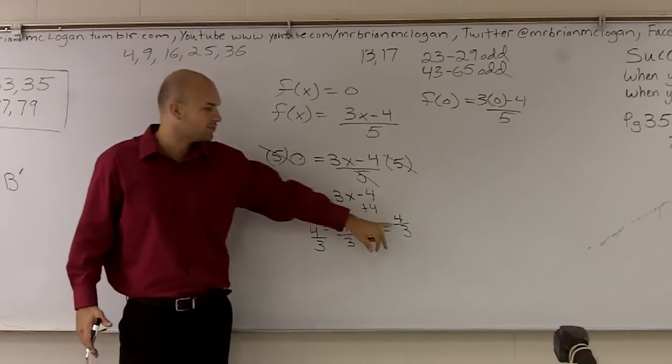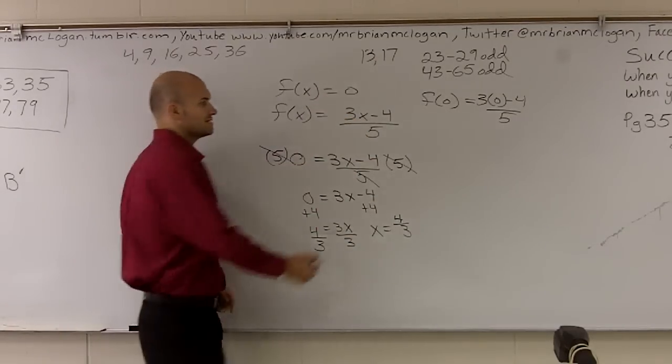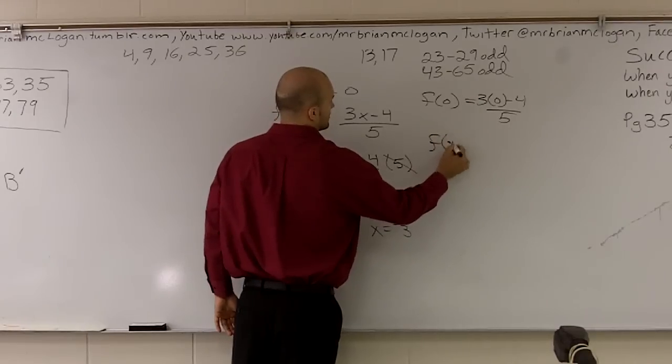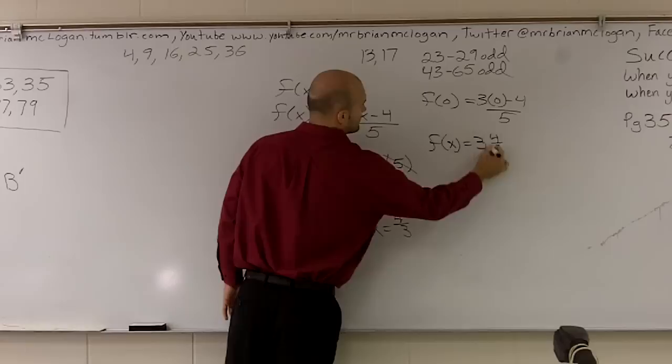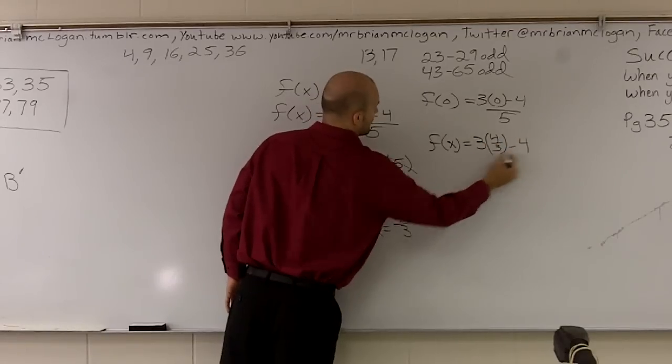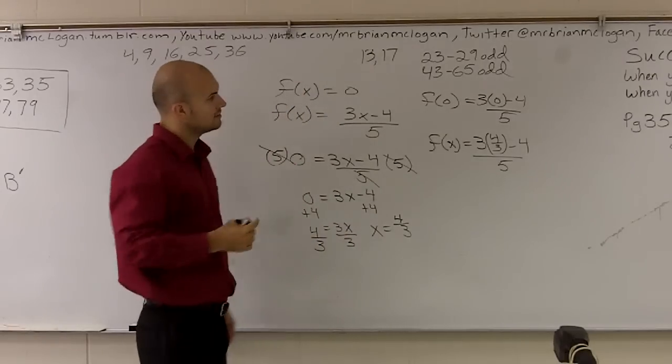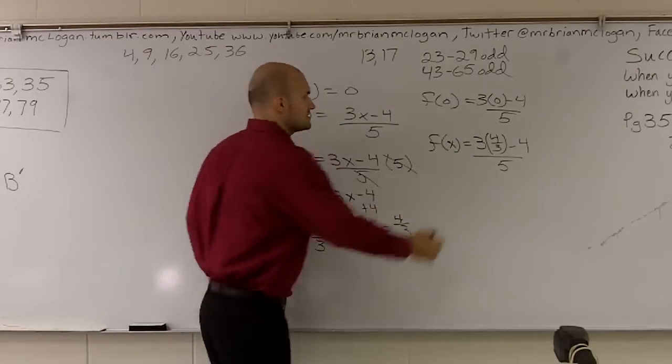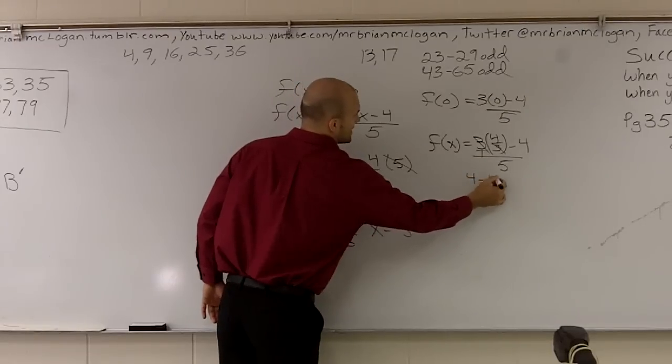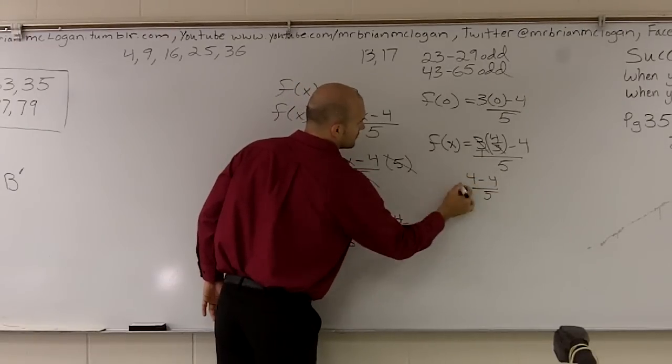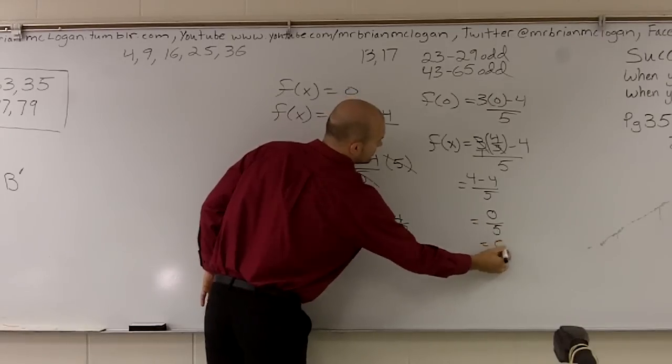All right, so if you guys want to plug that in, plug 4 thirds in for x. It's fairly easy, we can do that real quick. If I plug in 3 times 4 thirds minus 4 over 5, what do I get? Those cancel out, so I'm left with 4 minus 4 over 5, which gives me 0 over 5, which gives me 0.